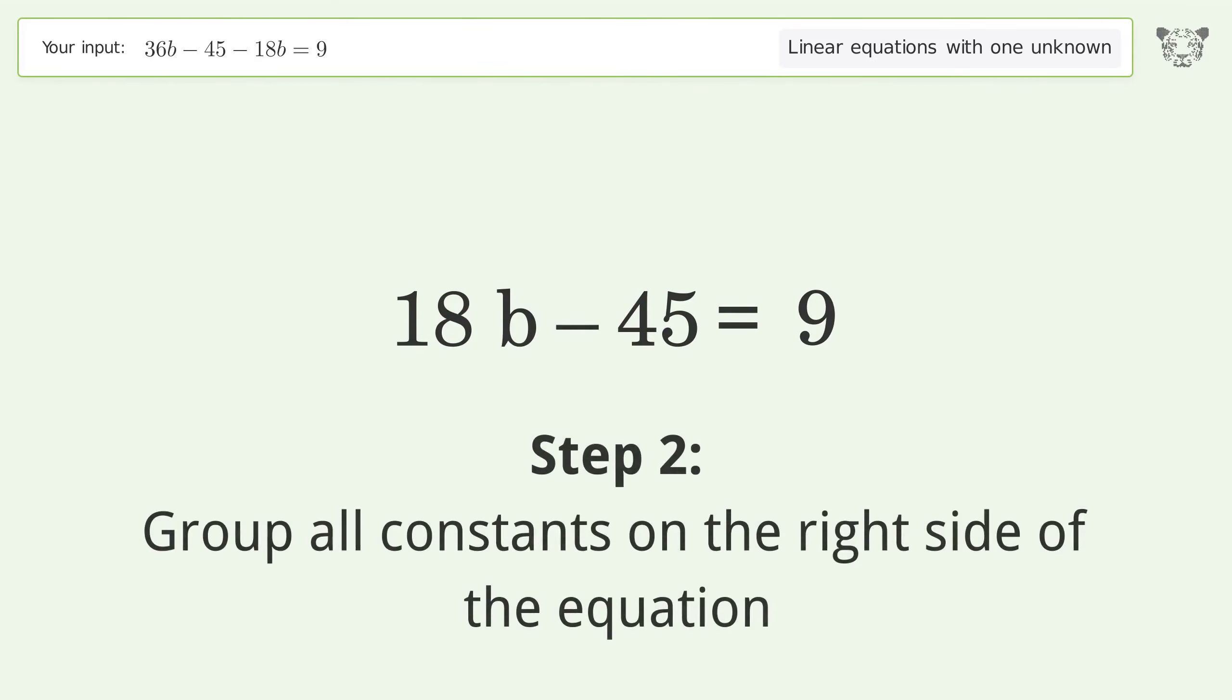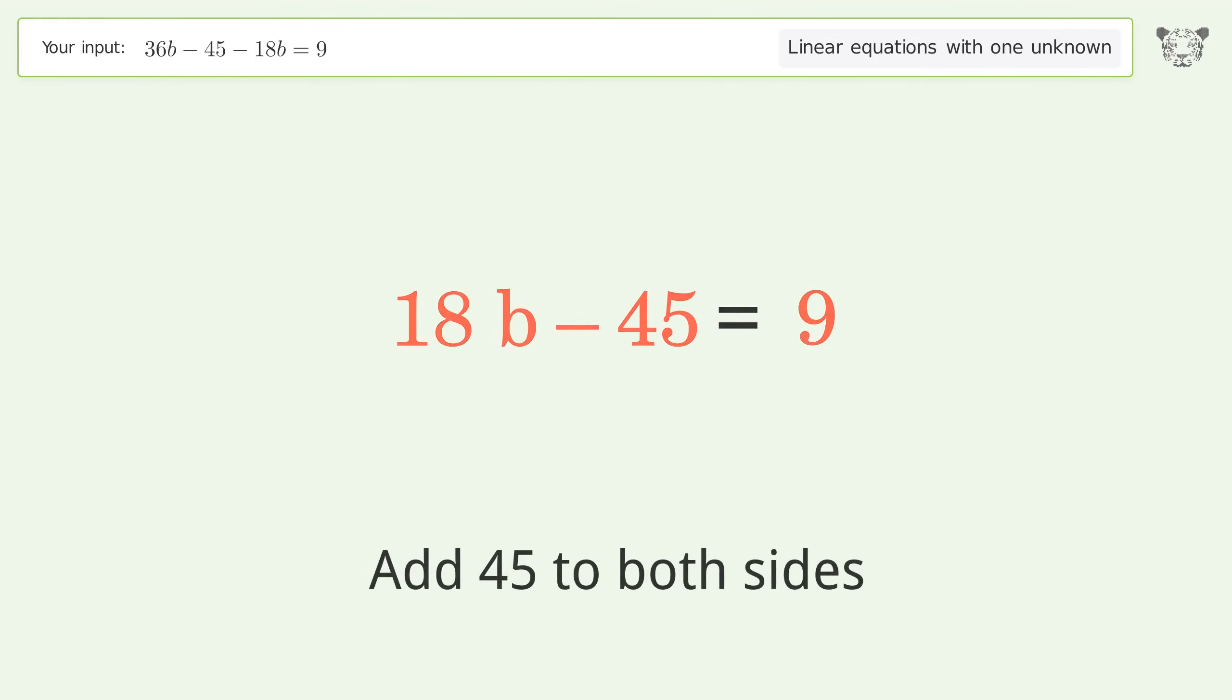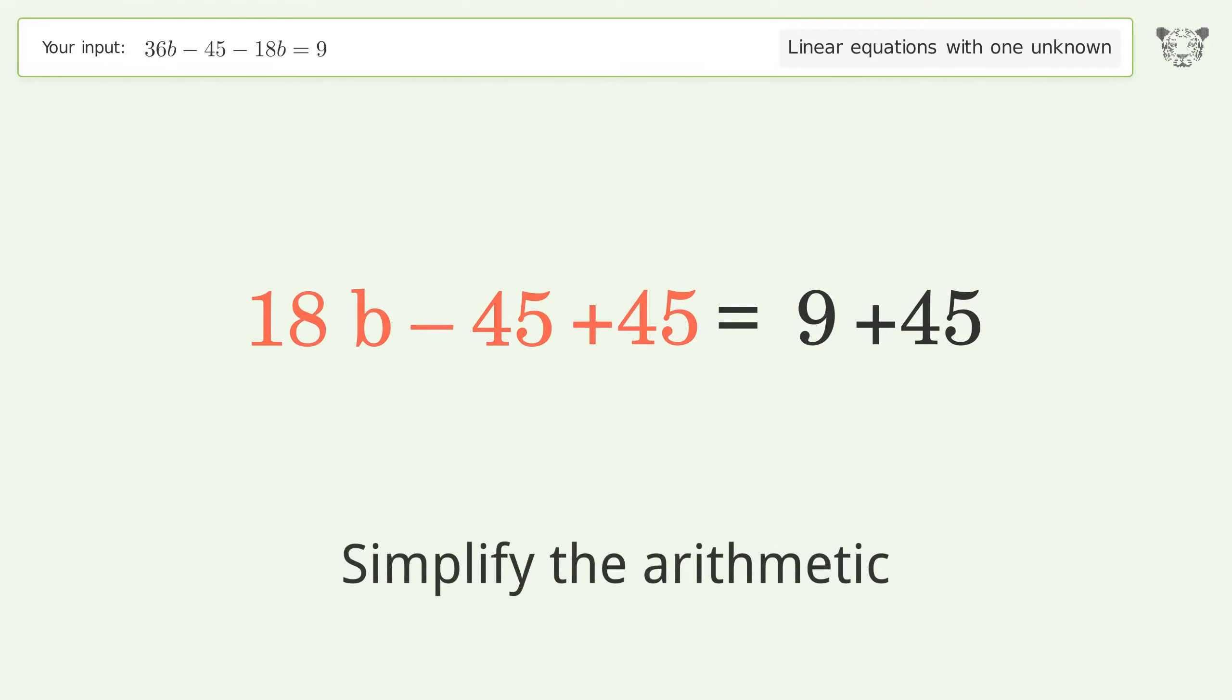Group all constants on the right side of the equation. Add 45 to both sides. Simplify the arithmetic.